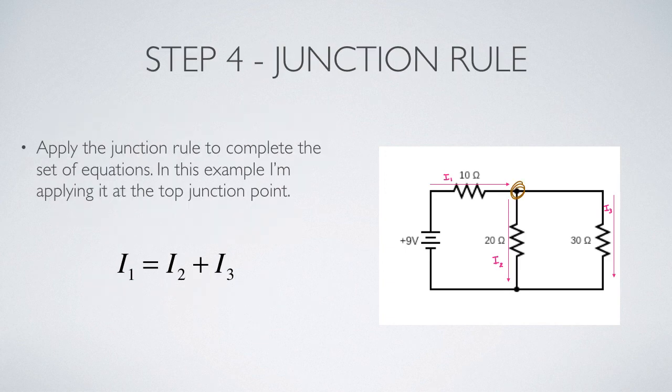So I get my third equation from the junction rule. There are two junctions in the system, and I've arbitrarily picked the top one. Current one flows in, and currents two and three flow out of that junction point. So the junction rule yields I₁ equals I₂ plus I₃.